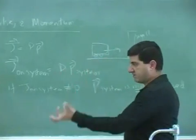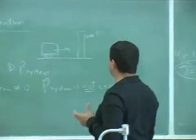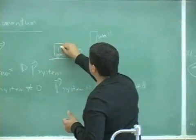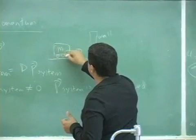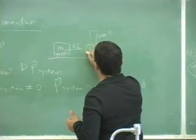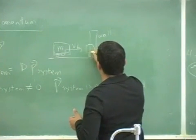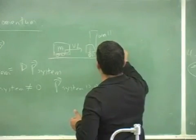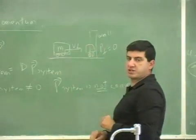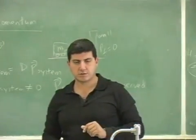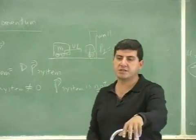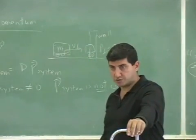Anytime where something is fixed and there's an external force, the momentum of the car — M1·V1 — by the time it hits the wall, the final momentum is going to be zero, and there's going to be 100% loss of momentum. So momentum is not conserved in those situations.